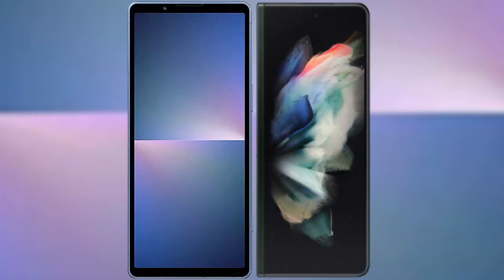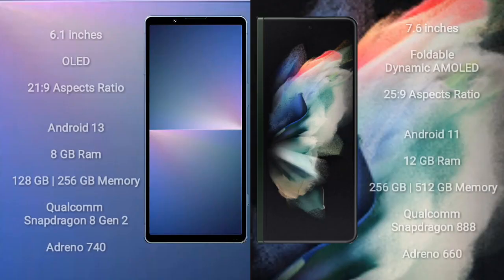I will compare the new Sony Xperia 5 Mark 5 with Samsung Galaxy Z Fold 3. Sony Xperia 5 Mark 5 comes with a 6.1 inches OLED display and an aspect ratio of 21:9. Samsung Galaxy Z Fold 3 comes with a 7.6 inches foldable dynamic AMOLED display and an aspect ratio of 25:9.